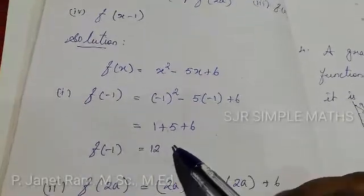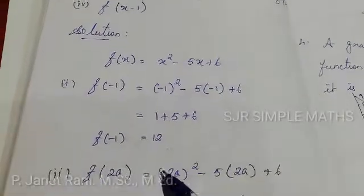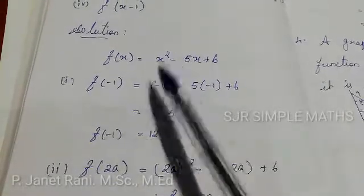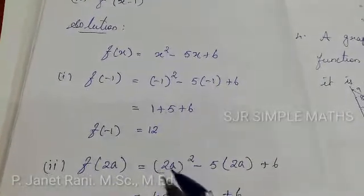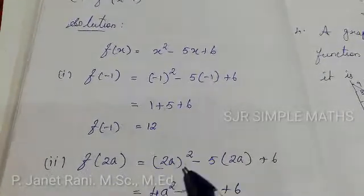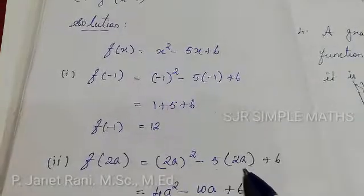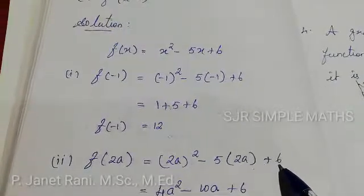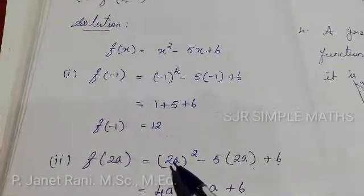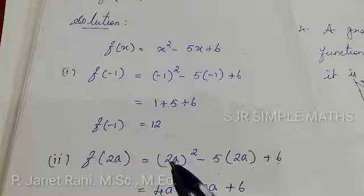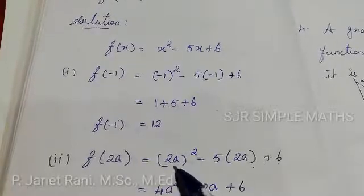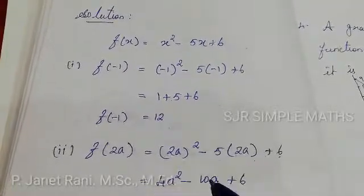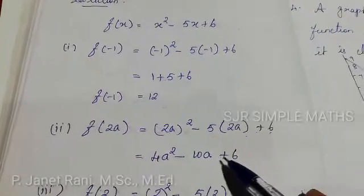Second: f(2a). Substitute x = 2a. f(2a) = (2a)² - 5(2a) + 6 = 4a² - 10a + 6.